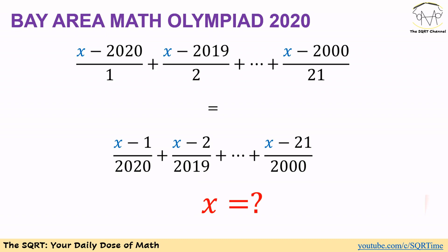Hello everyone, welcome to the SQRT channel. In this video we are going to talk about a problem from Bay Area Math Olympiad 2020. In this problem we have x minus 2020 over 1 plus x minus 2019 over 2.